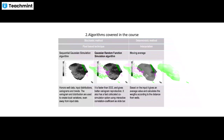In Gaussian Random Function Simulation (GRFS), it is faster than SGS and gives better variogram reproduction. It also has a fast co-located co-simulation option using interface correlation coefficients as a slide bar. In moving average, the average value is calculated based on the inputs given, and weights are calculated according to the distance from the wells.